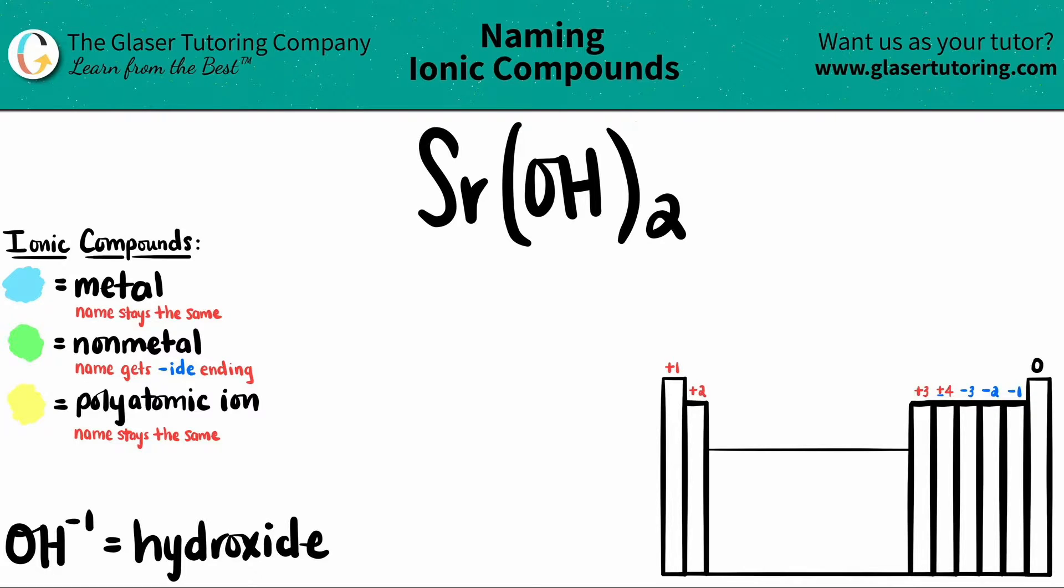Today, we are going to find the name of the ionic compound Sr(OH)2. Now, here's a little trick. If you see three or more different elements in your ionic compound, you know that you have at least one polyatomic. So it's easiest to find the polyatomic and then try to go from there with the naming.